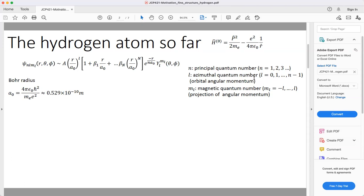l denotes the orbital angular momentum of the electron and is sometimes called the azimuthal quantum number. This can vary from zero to n minus one, where n is the principal quantum number. The third quantum number is the magnetic quantum number, ml, and it's the projection of the angular momentum onto the z-axis.